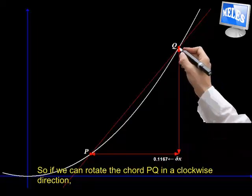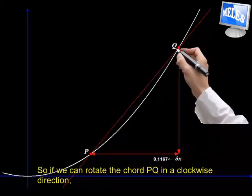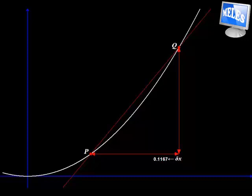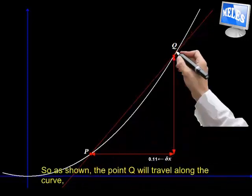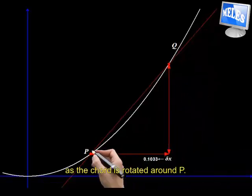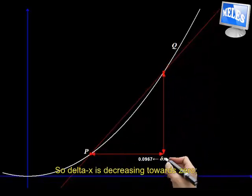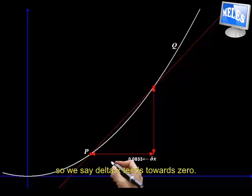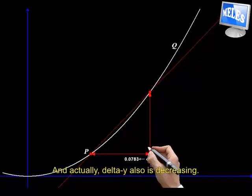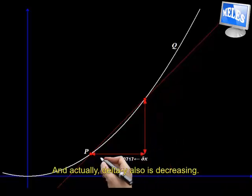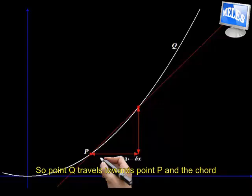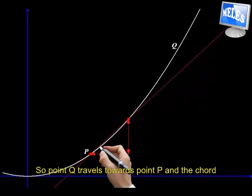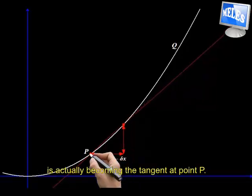Okay, so if we can rotate the chord PQ in a clockwise direction, in that sense, about the point P, as shown, the point Q will travel along the curve. The chord is rotated around P, so delta x is decreasing towards zero. So we say delta x tends towards zero. And actually, delta y also is decreasing. So point Q travels towards point P, and the chord is actually becoming the tangent at point P.